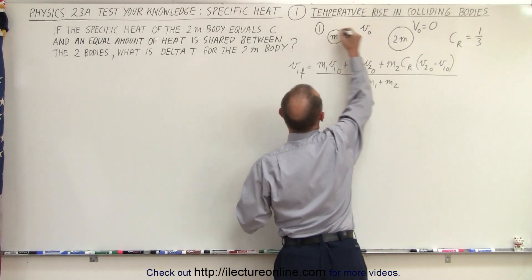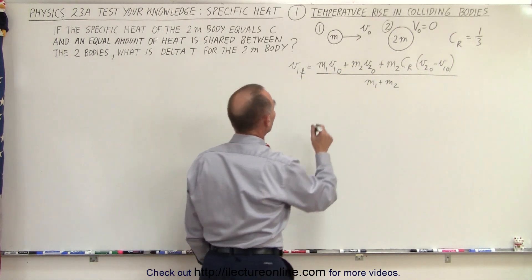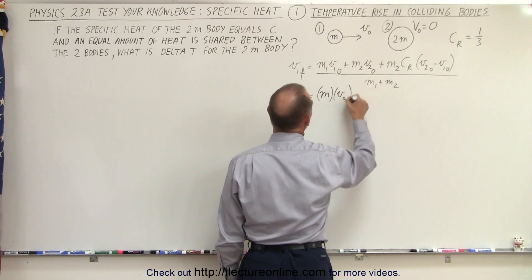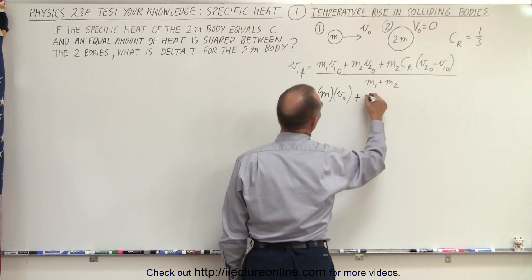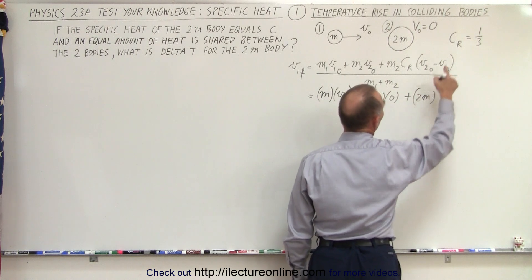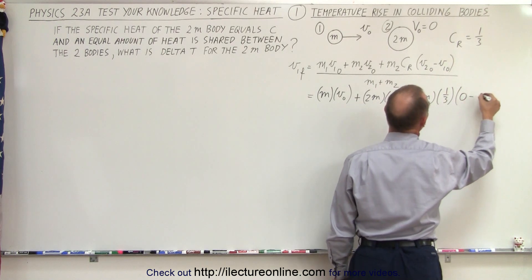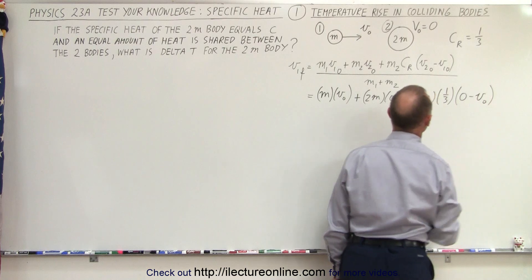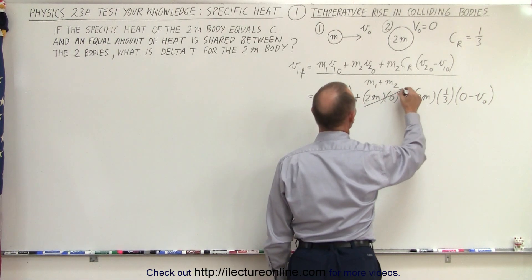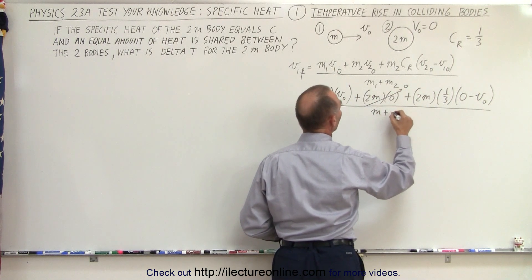So this is object 1 and this is object 2. First we're going to find the final velocity of object 1. Let's plug in what we know into this equation. That is equal to mass 1, which is m, times v-initial for the first mass, plus mass 2, which is 2m, times v-initial, which is 0, plus mass 2, which is 2m, times the coefficient of restitution, which is one-third, times the difference between the velocity of the second object (which is 0) minus the velocity of the first object (which is v-initial), all divided by the sum of the two masses, which is m plus 2m.